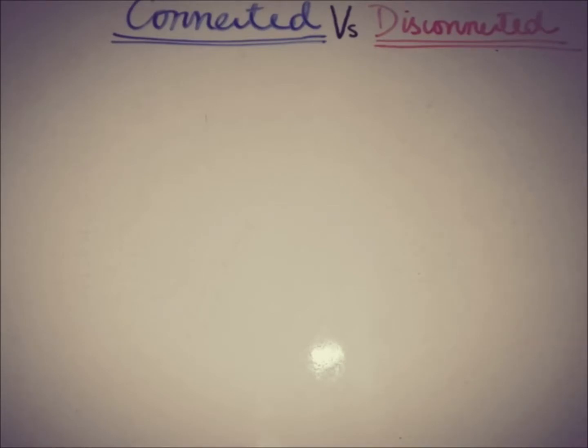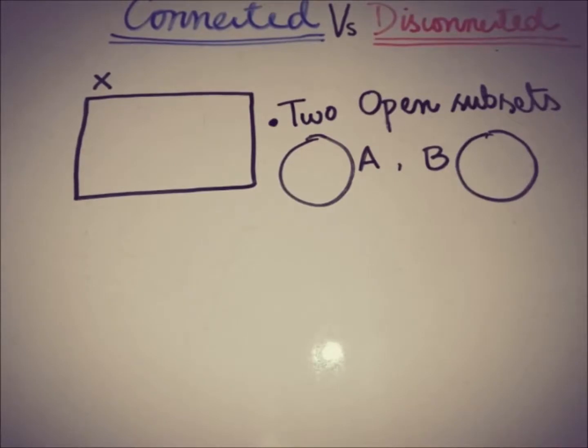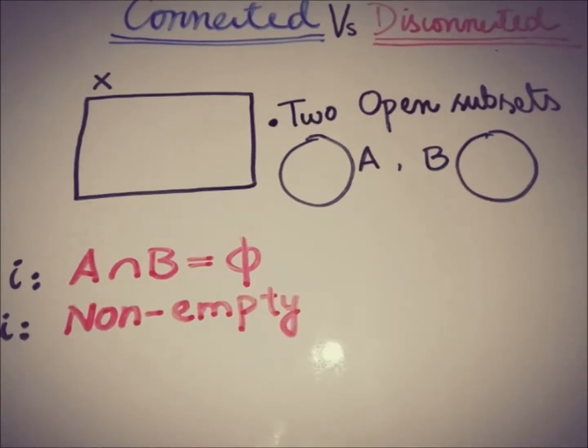If we have a topological space and we have two open subsets, let's call them A and B, and if they have three properties: the very first is they have to be disjoint, that is, whose intersection is empty. The second property is they must be non-empty subsets of X.